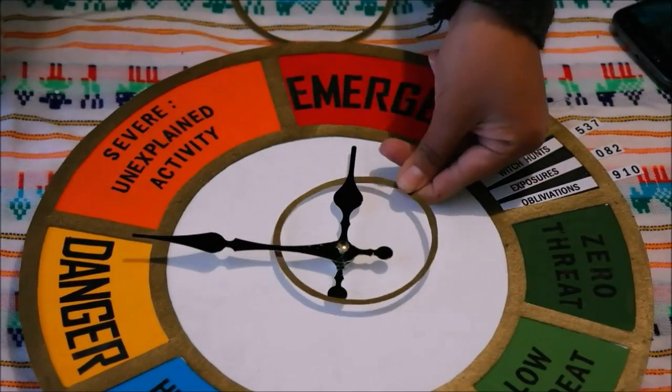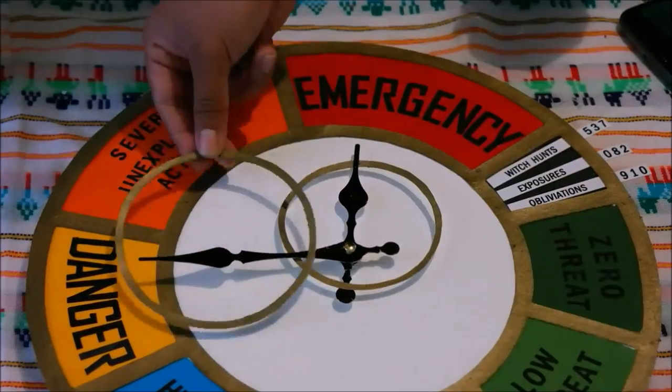We almost finished. Take your golden cardboard circles and glue them to the clock hands.